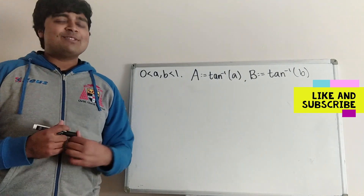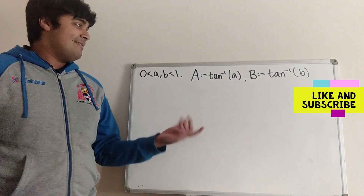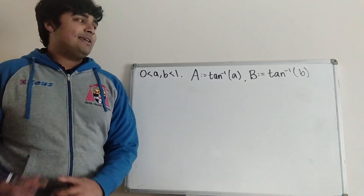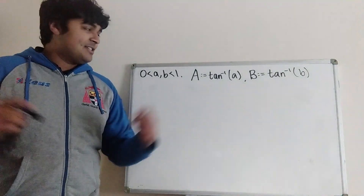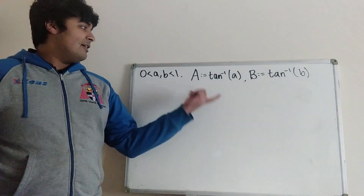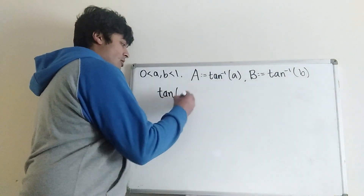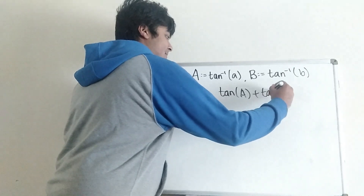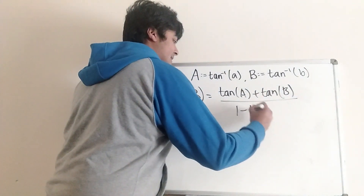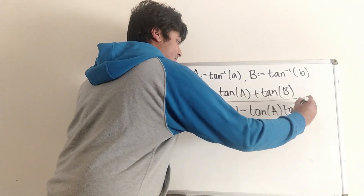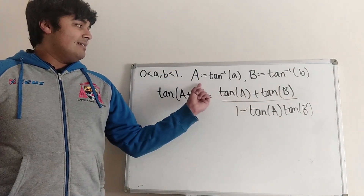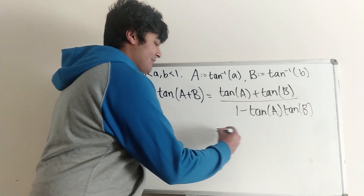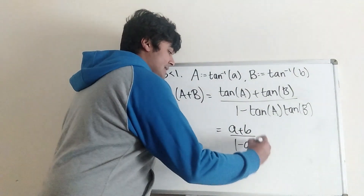The first part of this problem shouldn't be too difficult provided you know your double angle formula for tan. We have little a and little b being between 0 and 1. I'm going to define big A to be inverse tangent of little a and big B to be inverse tangent of little b, just for notation's sake. Then we're going to use our double angle formula on big A and big B. So we get tan of (A plus B) equals (tan A plus tan B) all over (1 minus tan A tan B). But tan of big A is just going to be little a, and similarly tan of B is just going to be little b. So the right-hand side simplifies to (a plus b) all over (1 minus ab).